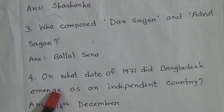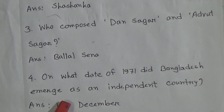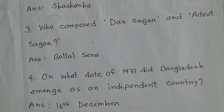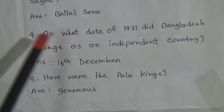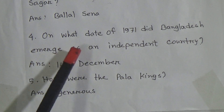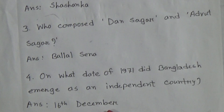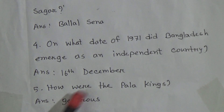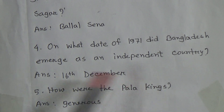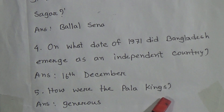Number 4: On what date of 1971 did Bangladesh emerge as an independent country? Its answer will be 16th December. Number 5: How were the Pala kings? Its answer will be Generous.